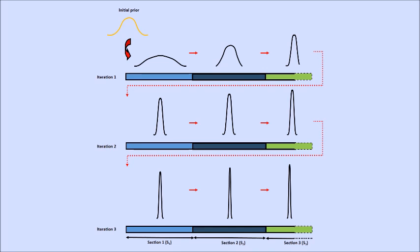At the bottom, the different sections are labelled: section one, section two, and section three. Each iteration is on the same sections of DNA, on the same sequence — it's just going through using the posterior distribution from the one before it as the prior.